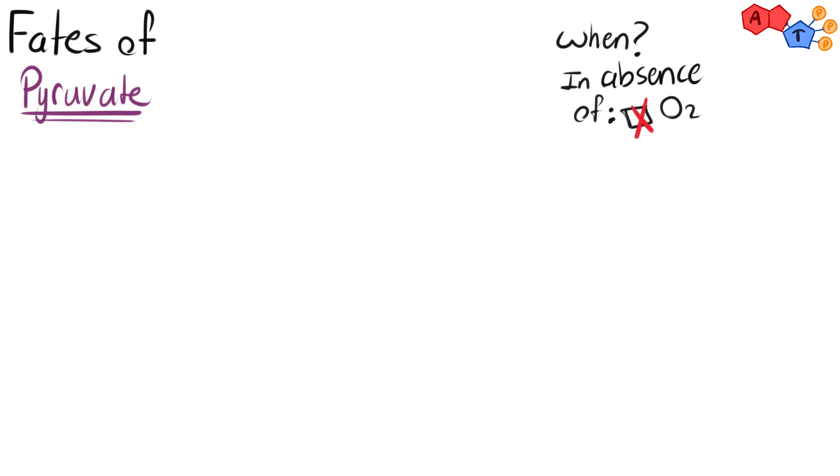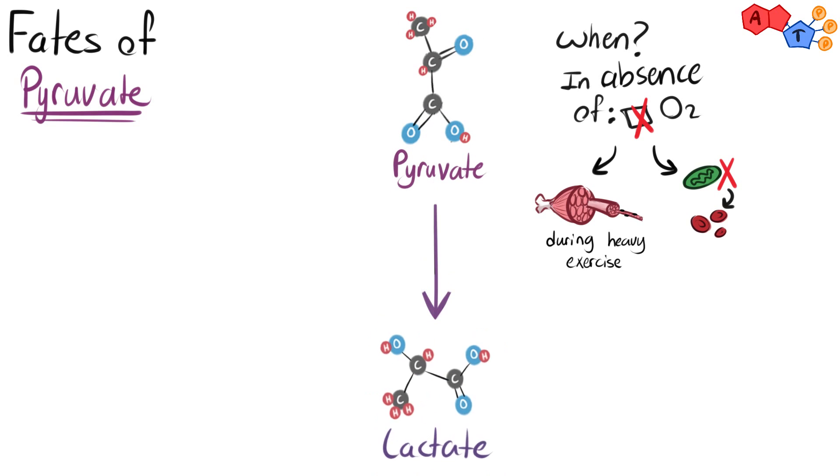Two, in the absence of oxygen, like skeletal muscle cells during strenuous exercise, or in the absence of mitochondria, like red blood cells, pyruvate is converted into lactate in a reaction catalyzed by the enzyme lactate dehydrogenase. This reaction is important in order for glycolysis to happen because it requires NAD+. This reaction supplies the cells with NAD+ as a byproduct and lactic acid as a final product.